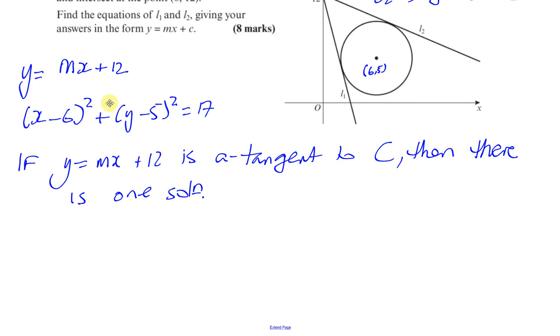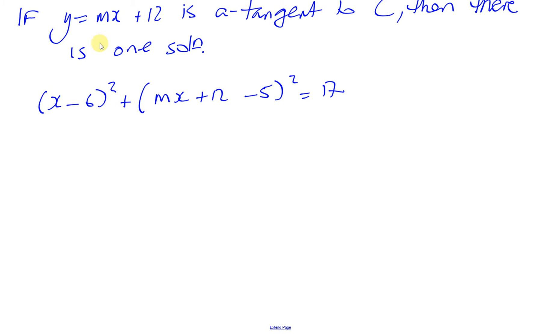So how do I solve this simultaneously? Well, I replace the y with mx + 12. So I have (x - 6)² + (mx + 12 - 5)² = 17. I'll just carry on down this page.